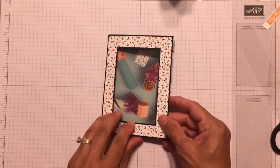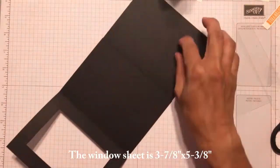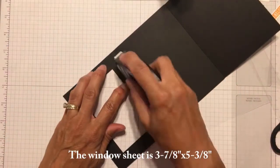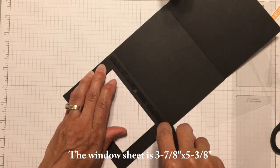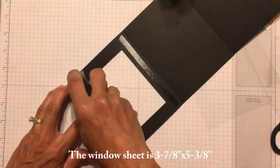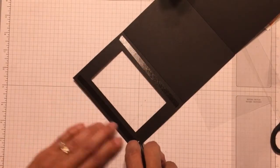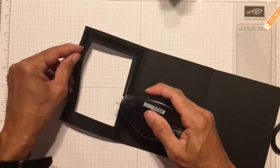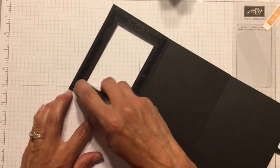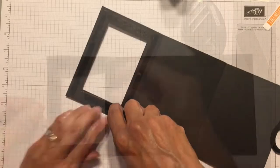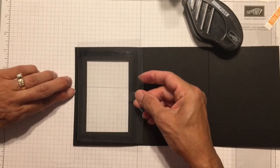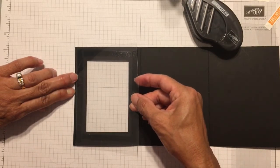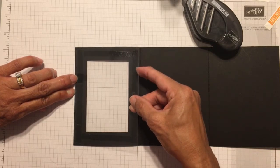I cut my piece of acetate one-eighth of an inch smaller on each side than the card base. So it's three and seven-eighths by five and three-eighths. And I'm attaching it to the inside of the card with some fast fuse. And I'm trying to apply the fast fuse in full strips so that it looks a little bit better when I apply the acetate and you can see the fast fuse through it.